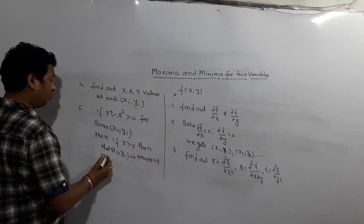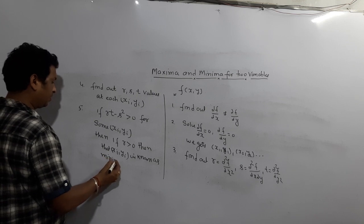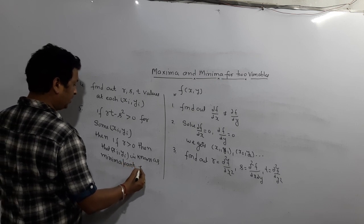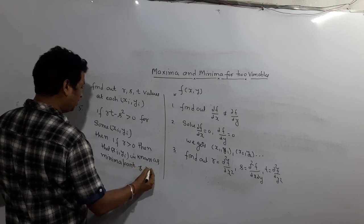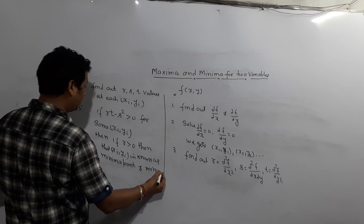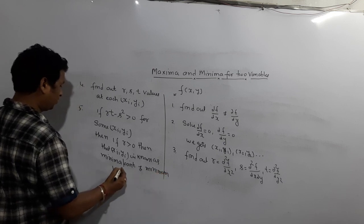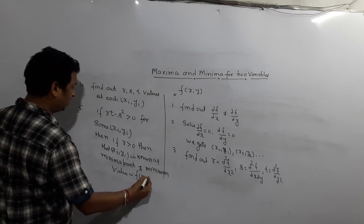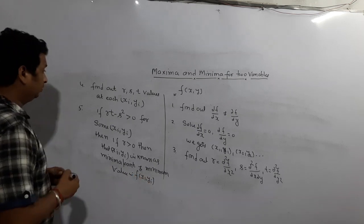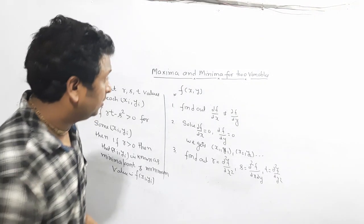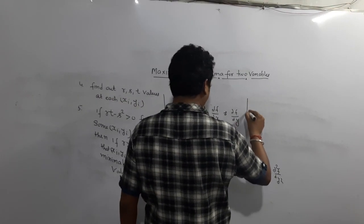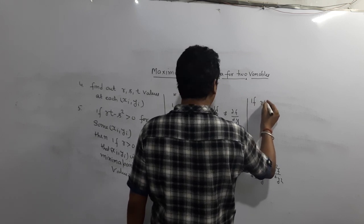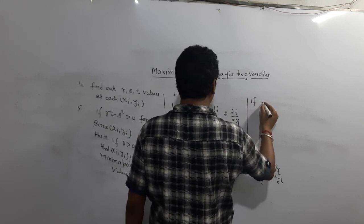Step four: find out the R, S, T values at each stationary point (x, y) — meaning whatever stationary points we got from step two. For each and every point, find out the R, S, T value at that point.